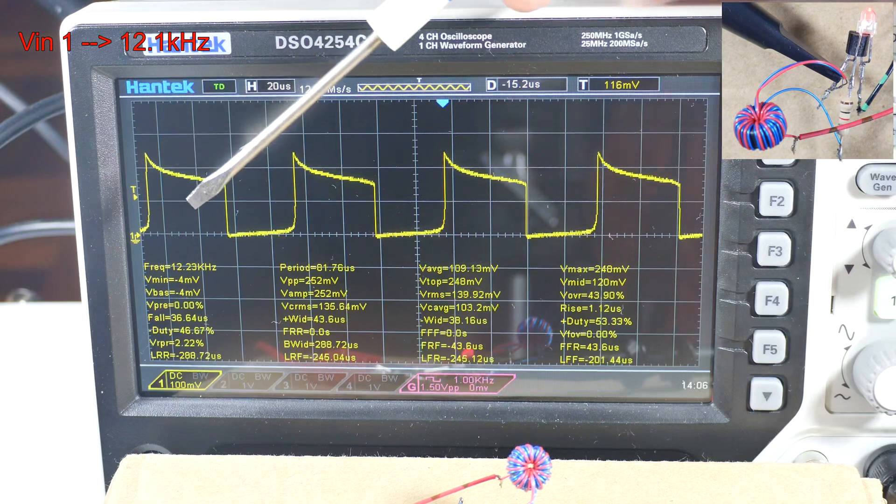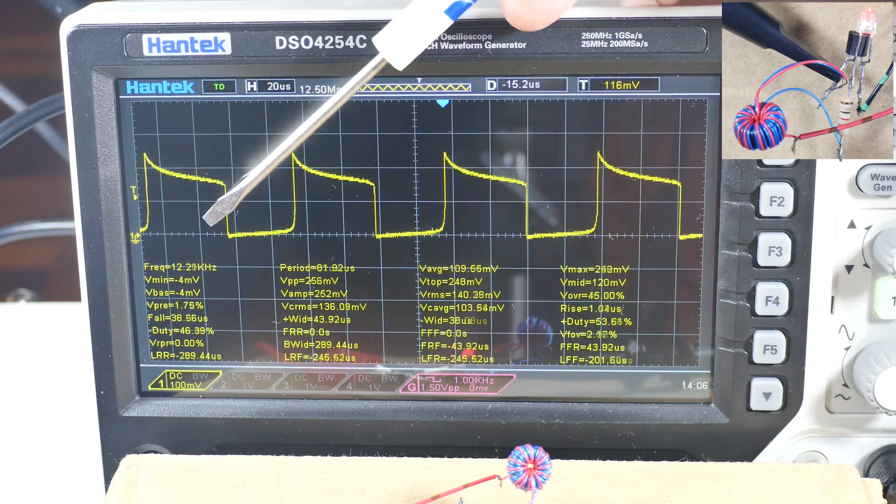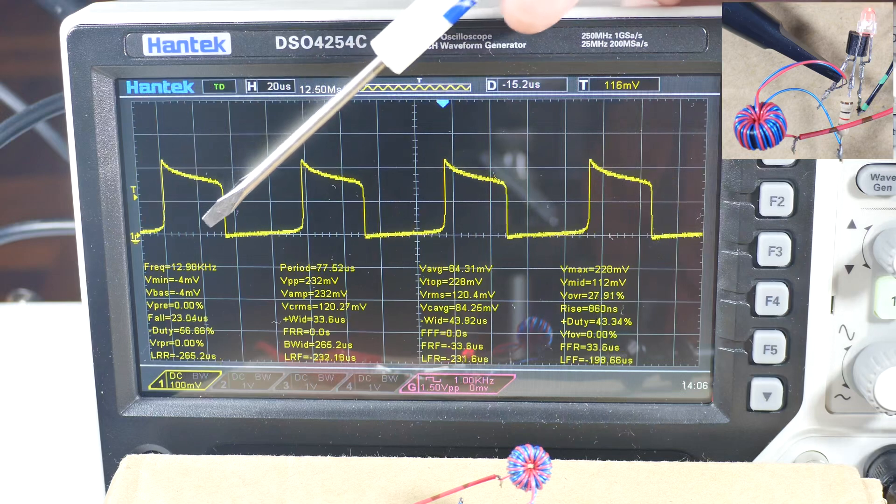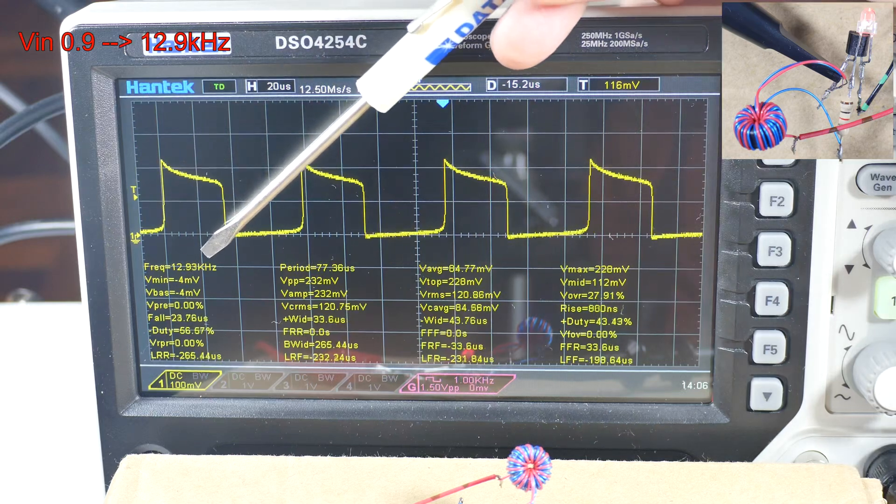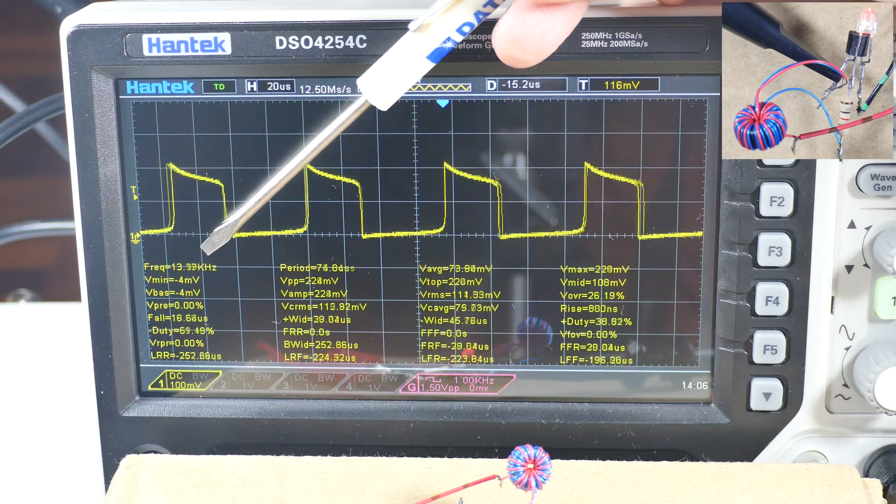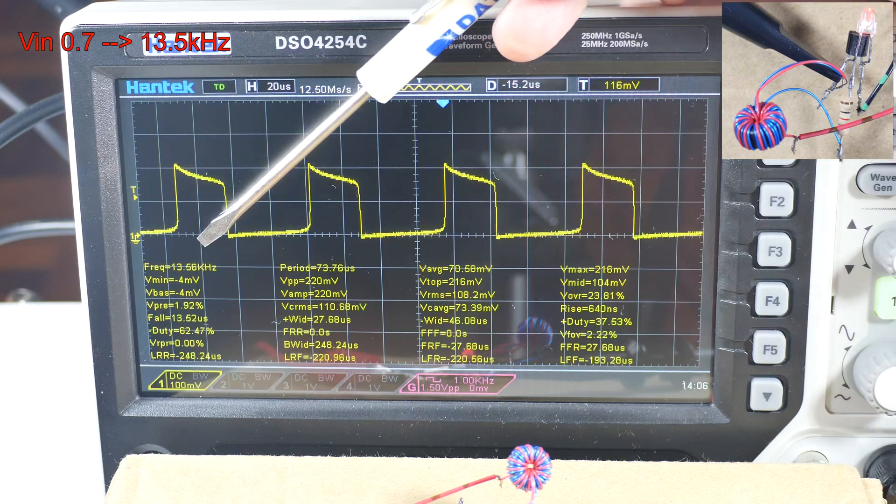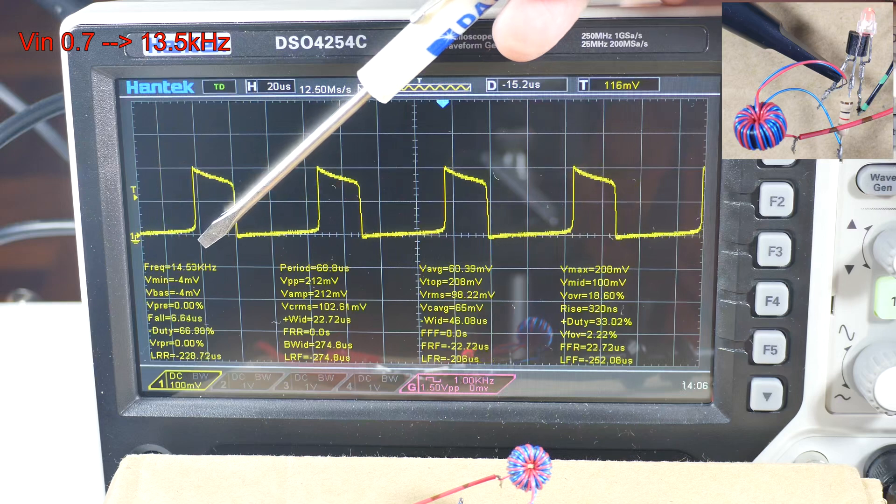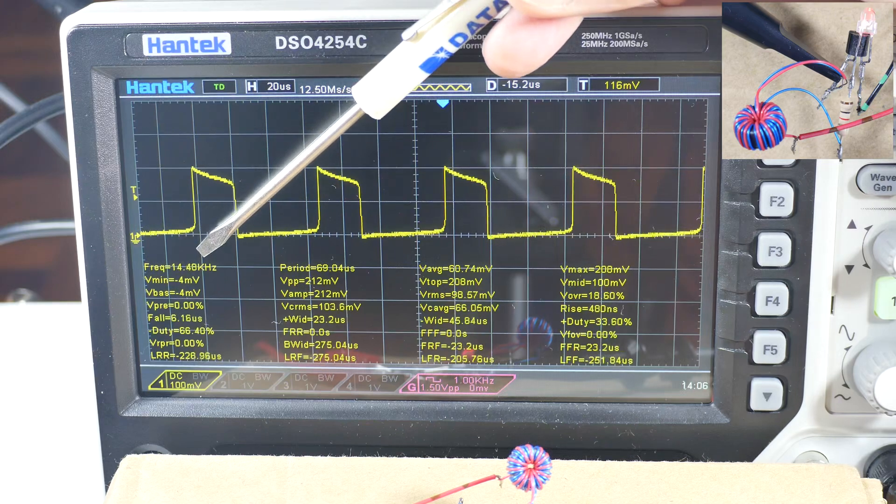If I adjust the voltage, let's go down a little bit. So the battery is dying. And now we have 0.9 so it goes up to 12.9. Go down to 0.7, it jumps to 13.5. Kind of interesting as the voltage is going down, the frequency is going up.